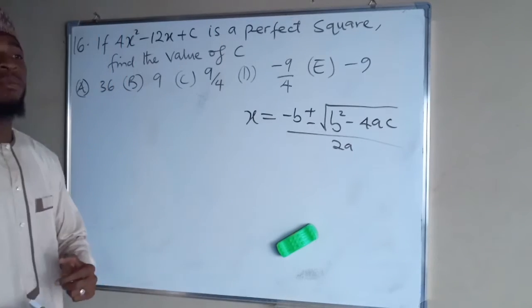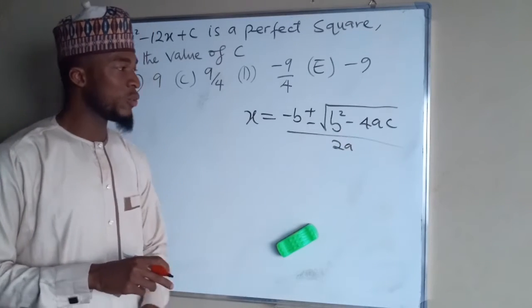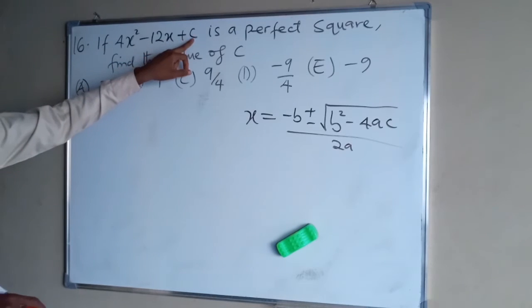It has been derived from the method of completing the square. You see the terms under the square root, B squared minus 4AC, will help you to find the real value of this C.